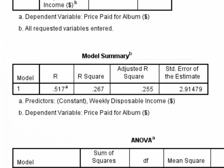In the model summary table, there are a few different figures of interest. The first is R-squared, which indicates the proportion of variance in the criterion accounted for by the predictor variable. In this case, disposable income can account for 26.7% of the variance in prices that people paid for the album. By extension, this leaves 73.3% of the variance in prices paid unaccounted for. It's possible that by including additional variables in this regression model, we could improve its predictive utility.